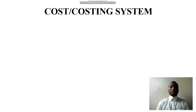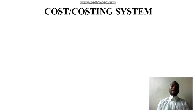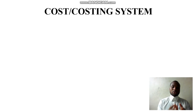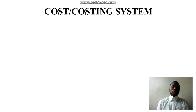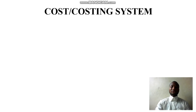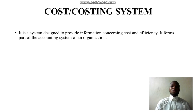So what is a costing system, or a cost accounting system? A costing system is established in the organization and it is part of the accounting system of the organization. Its purpose is to produce reports and cost data so that management will use it to make decisions. It is a system designed to provide information concerning costs and the efficiency of the organization.